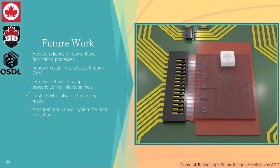Our next steps are to reduce the reliance on conventional fabrication processes — rather than a liftoff procedure for printing electrodes, we want to use doctor blading systems or bioplotters. We also want to improve the crystallinity of our organic semiconductor by including a self-assembled monolayer to increase charge mobility and improve output characteristics. Additionally, we want to create an effective sample preconditioning and handling microchannel for a complete sample-to-analysis system on chip, test with saliva and other complex media, and collect data with an amperometric sensor system.